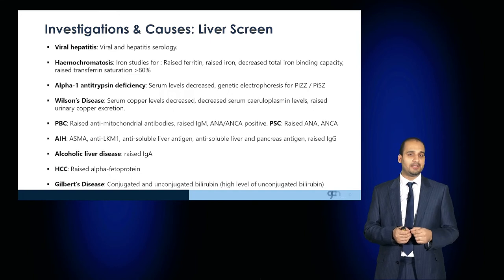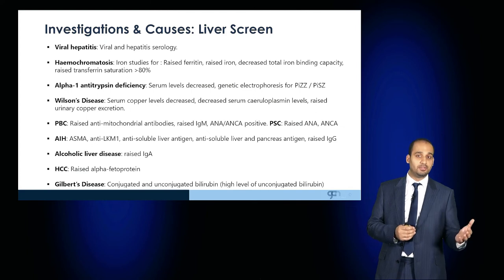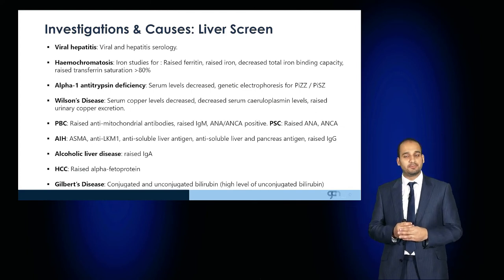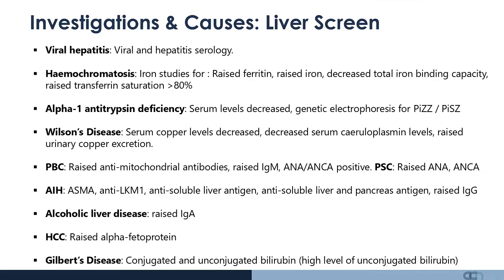If thinking about alpha-1 antitrypsin deficiency, serum levels would be reduced and the patient should be sent for electrophoresis looking for PIZZ and PISZ patterns. For Wilson's disease, serum copper levels would be reduced, serum caeruloplasmin levels would be reduced, and urinary copper excretion would be increased. PBC is associated with raised antimitochondrial antibodies and raised IgM, and is usually ANA and ANCA positive, whereas PSC is more strongly associated with ANA and ANCA positive antibodies.